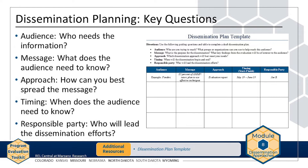Finally, the responsible party is the individual or individuals who will be in charge of dissemination efforts — who will lead the dissemination efforts? Asking and answering these five critical questions will help you develop a solid dissemination plan. In the rest of this chapter, you will further consider each of these five questions to help you draft a dissemination plan.